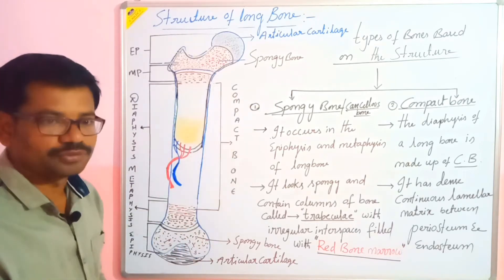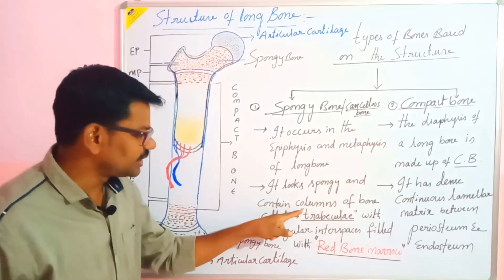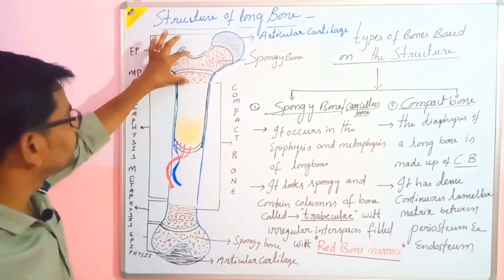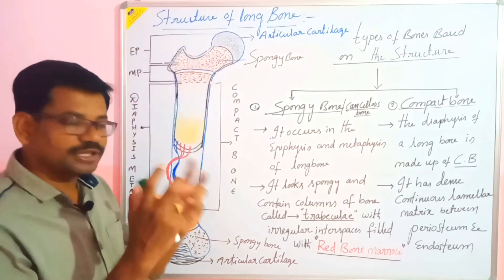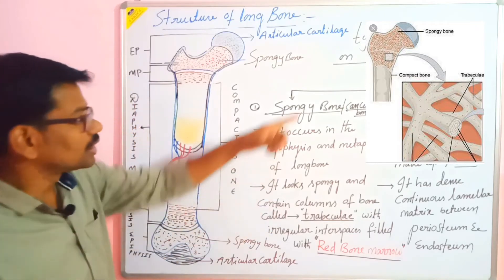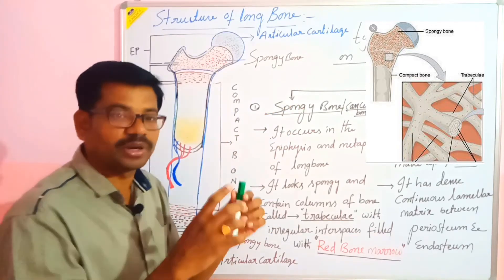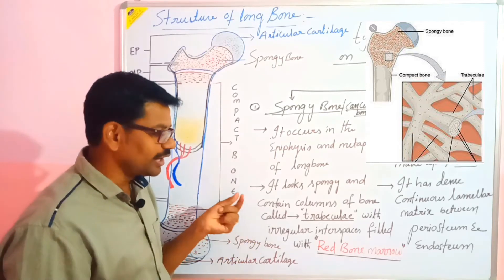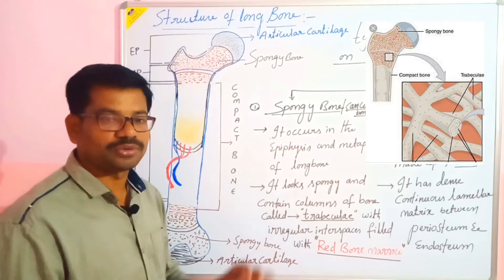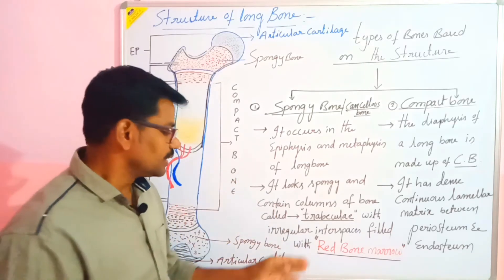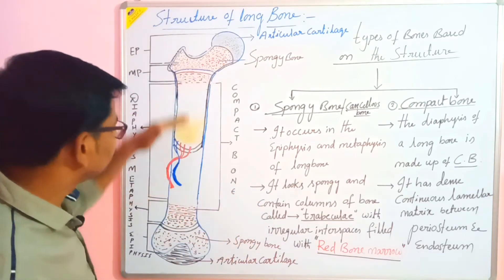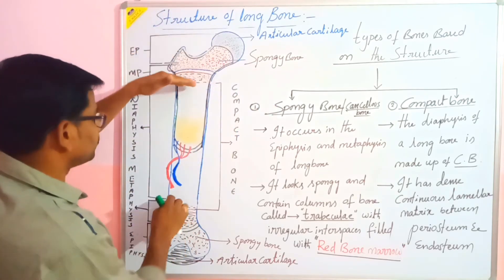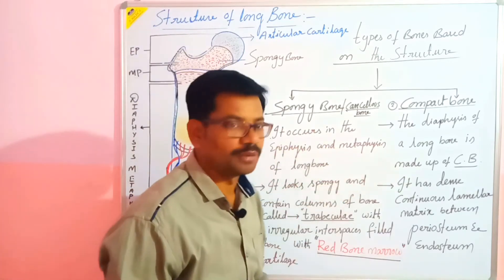The characteristic of spongy bone is that it looks spongy and contains columns of bone called trabeculae. The epiphysis and metaphysis contain this spongy-like structure with beam-like or pole-like structures. Between the trabeculae, irregular spaces are filled with red bone marrow, which is responsible for production of RBC. These RBCs help provide proper supply of nutrients to the compact bone, so we can say the spongy bone supplies nutrients to the compact bone.